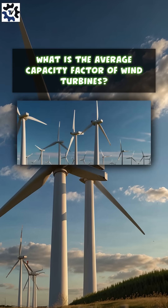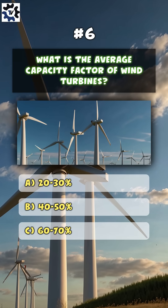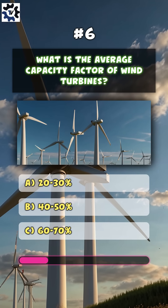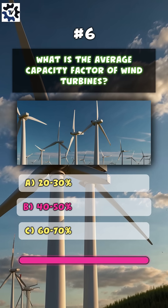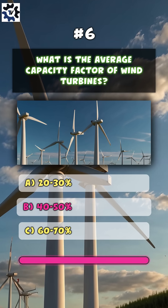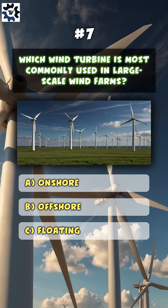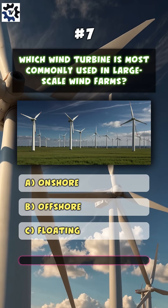What is the average capacity factor of wind turbines? B. 40-50%.